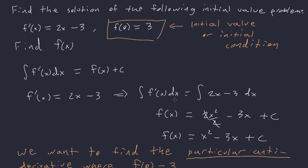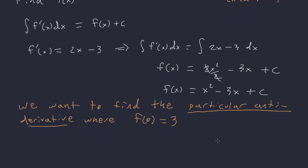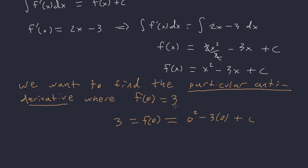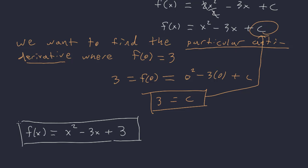Now we use f of 0 equals 3. This is what we call the initial value, or sometimes the initial condition. We're using it to find a specific C, because every antiderivative looks like x squared minus 3x plus C — we want the particular antiderivative where f of 0 equals 3. We plug 0 in to get 0 squared minus 3 times 0 plus C, which simplifies to 3 equals C. So f of x equals x squared minus 3x plus 3.